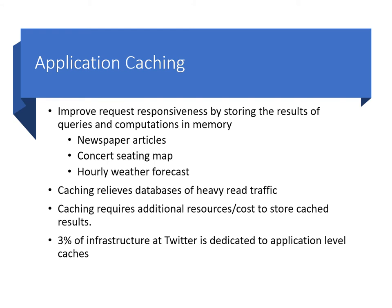Application caching improves request responsiveness by storing the results of queries and computations in memory, so that they can be served by later requests. For example, think of an online newspaper site where readers can leave comments. Once posted, the articles change very infrequently, if ever. Hence, an article can be cached on first access and reused by all subsequent requests. In general, caching relieves the database of heavy read traffic, as many queries can be served directly from the cache. It also reduces computation costs for objects that are expensive to construct — for example, those needing queries that span several different databases.